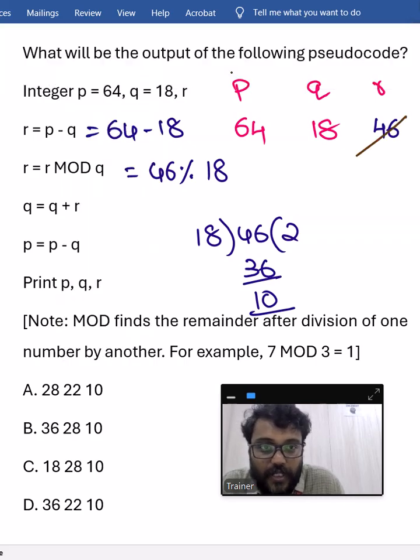Next, q equal to q plus r. q is 18, r is now 10, it will become 28. Fine. Then p equal to p minus q. p is nothing but 64, q is 28, subtracting will get 36.